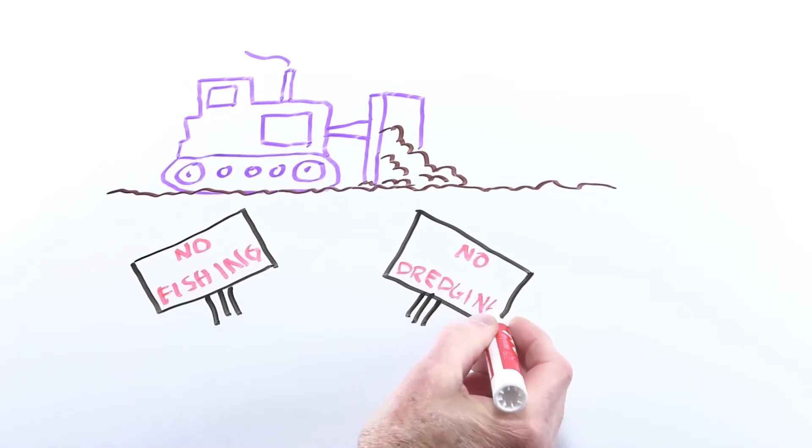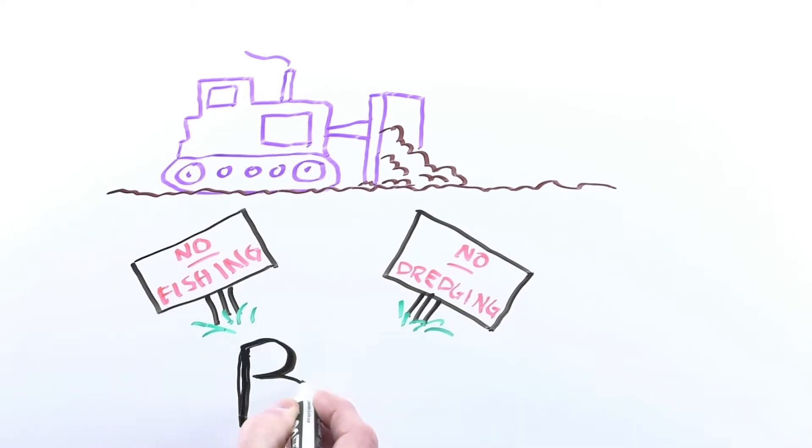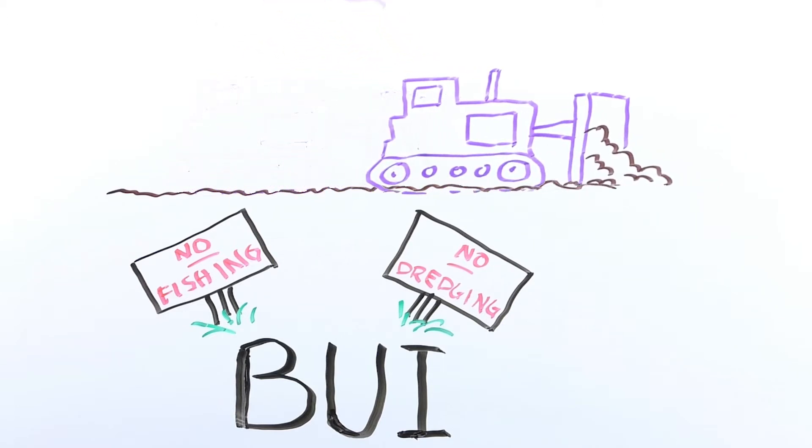We call these problems Beneficial Use Impairments, or BUIs. The U.S. and Canada began addressing these problems right away, but funding was limited and progress was slow.